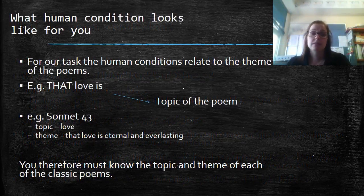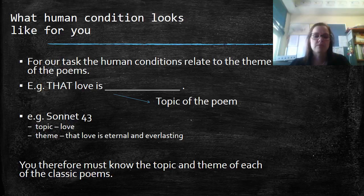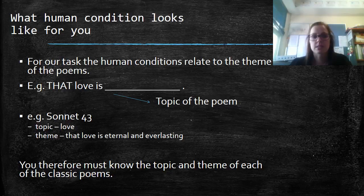For the purpose of our task, human condition relates to the theme of the poem. So that is, and then whatever the topic of the poem is. For example, Sonnet 43, the topic is love, the theme is that love is eternal and everlasting. You therefore need to know the topic and theme for each of the classic poems, and we'll review those in class this week.